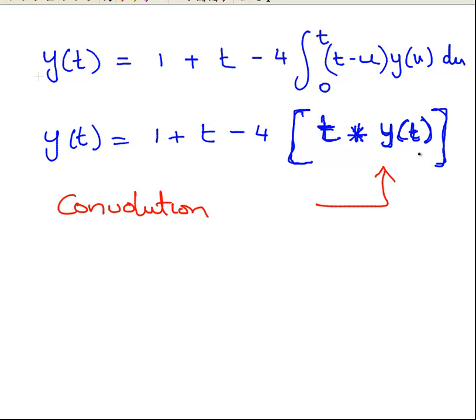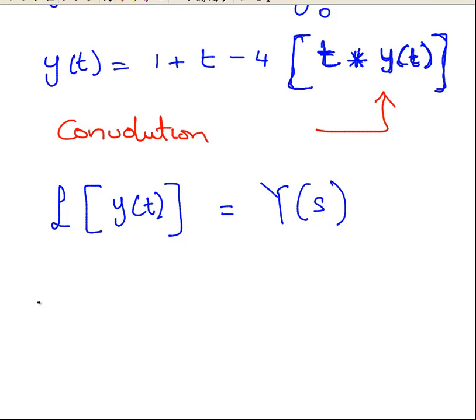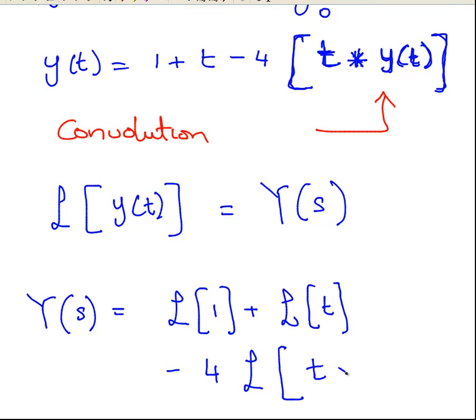Now, essentially what we have to do is solve for y of t here. So what I'm going to do is I'm going to get the Laplace Transform of both sides. So first off, the Laplace Transform of y of t. We'll denote that capital Y of s. I'm just going to call that y of s from now on. That's just a bit of notation. So y of s is the Laplace Transform of 1 plus the Laplace Transform of t, and that's straightforward enough, minus 4 times the Laplace Transform of t, the convolution of t and y of t.